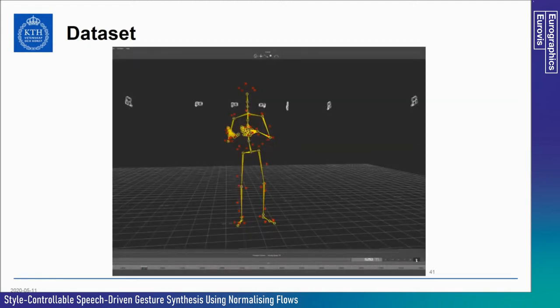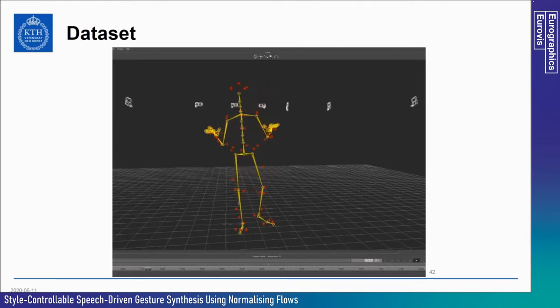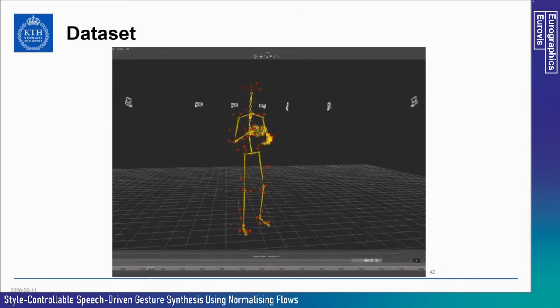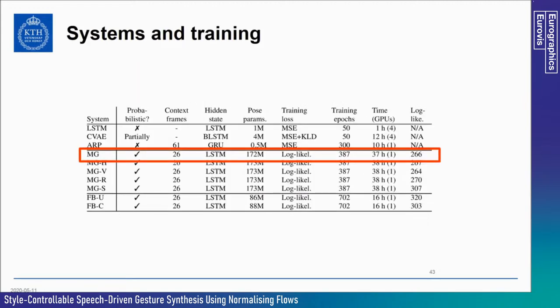Here is an example excerpt from the dataset. Note how the actor is constantly moving around and shifting pose. The dataset captures natural, continuous speech and varied body motion, which forms the basis for our training.